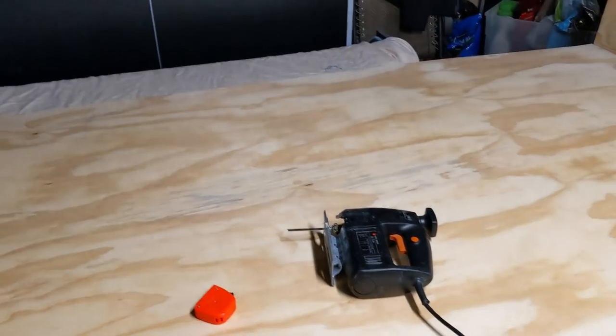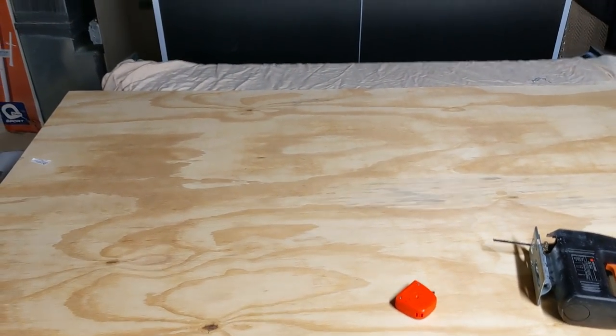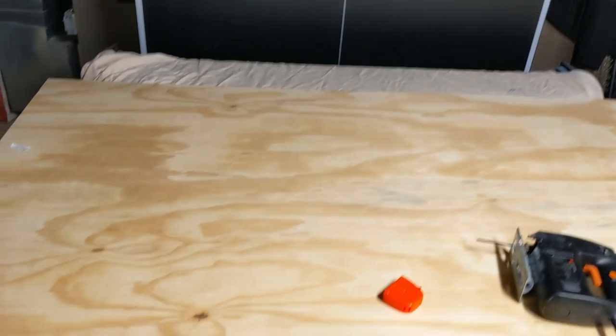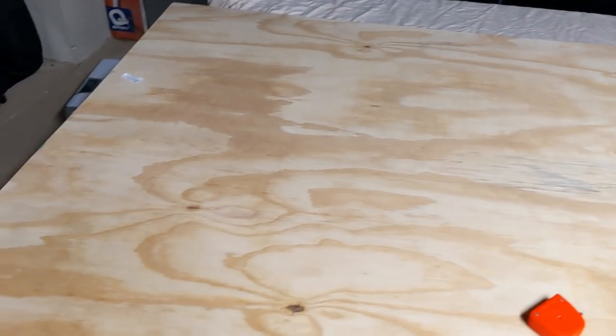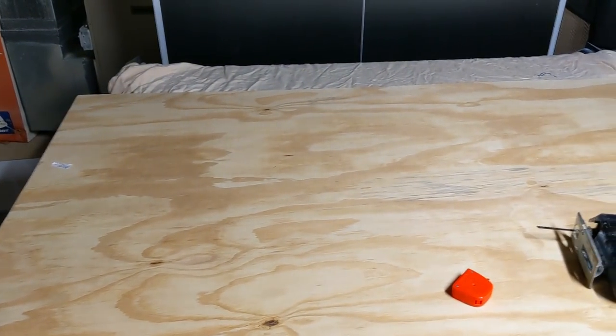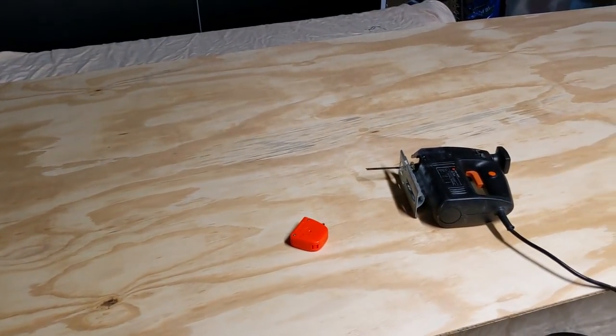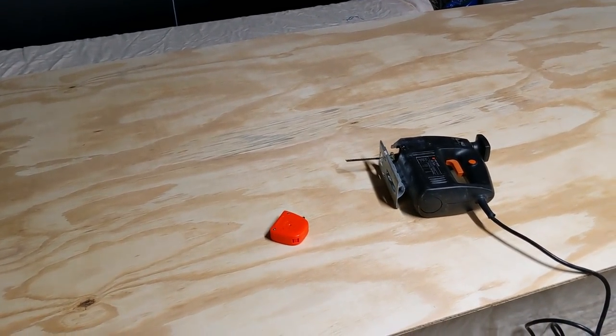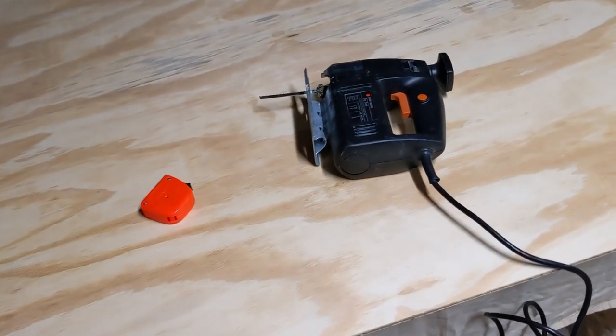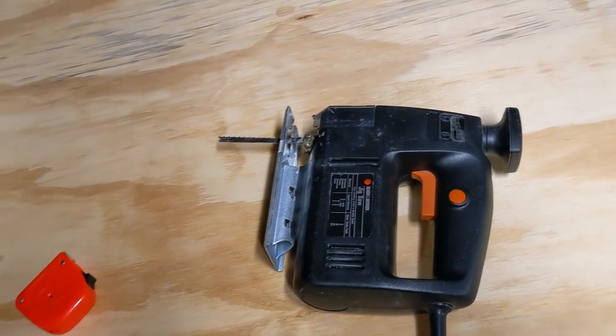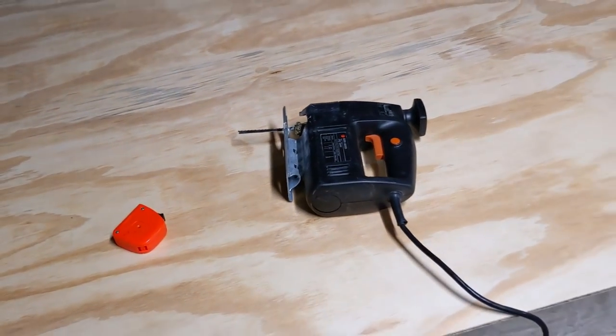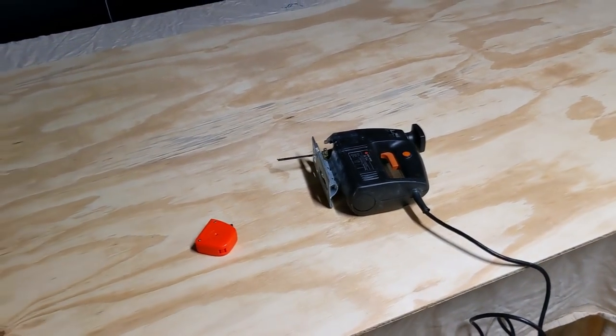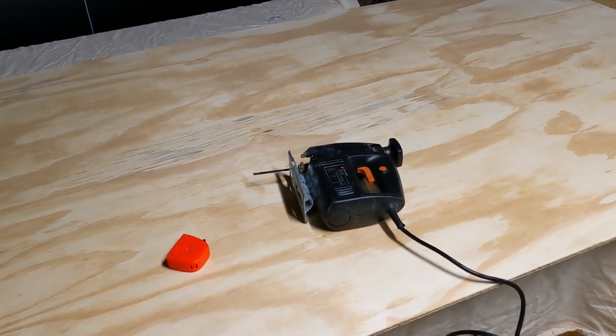I've got the plywood set up on my little makeshift table here. It's just my ping pong table with some sheets to protect it. Not the best setup but this is what I have. Now the appropriate tool for this would be a table saw. I don't have that, so I'm going to be using this jigsaw. Again, not ideal. If you have a table saw or even better if you have Home Depot do it, that's the best way.